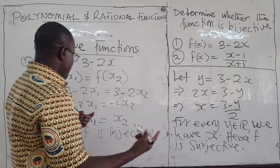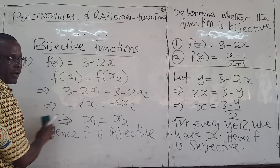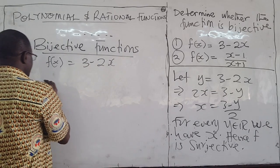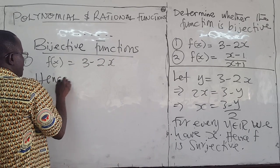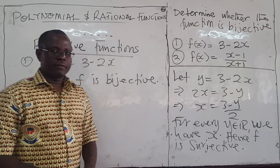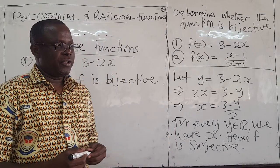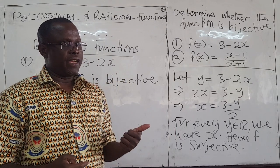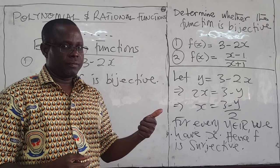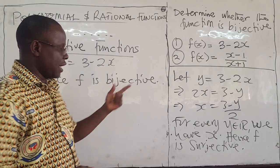Since the function is both injective and surjective, we conclude that f is bijective. You show that it's one-to-one, show that it's onto, and then conclude it is bijective. If it violates any of them — if it is onto but not one-to-one, or one-to-one but not onto — in either case it is not bijective. It has to be both.